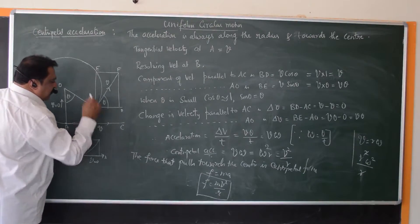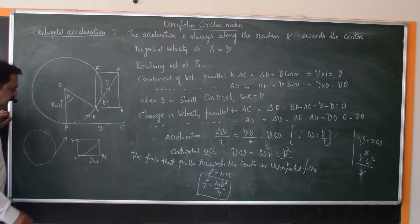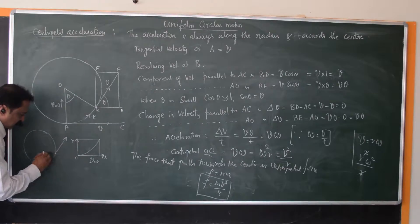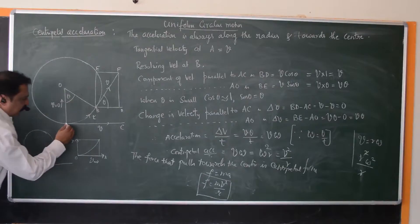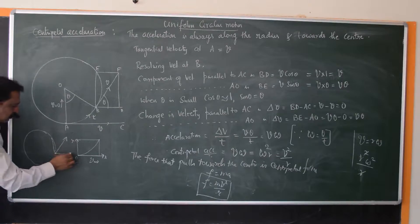Now when it comes to point B, what happens? At point B, the velocity is acting tangential. At any point, the velocity acts along the tangent. So this is not straight like you had at AC. Now this velocity has to be resolved into horizontal and vertical components.